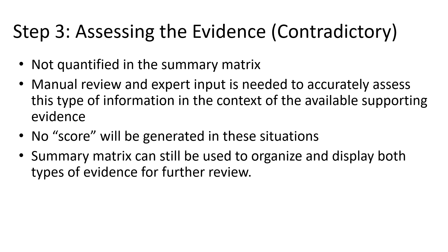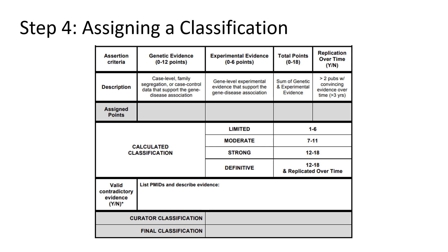What if there is evidence contradicting a gene's role in disease? Contradictory evidence is not quantified in the summary matrix, as it's often context-dependent and difficult to generalize. No score will be generated in these situations, but manual review and expert input is needed to accurately assess this type of information in the context of the available supporting evidence — in particular, to determine whether this is enough to classify the gene-disease pair as either disputed or refuted. Once all of this information has been collected and evaluated, our scoring matrix can be used to arrive at a preliminary classification. Within ClinGen, once a preliminary classification has been obtained by the curator, it's reviewed with the rest of the GCEP prior to approval, and after a gene curation has been approved, it's posted to our website for public use.